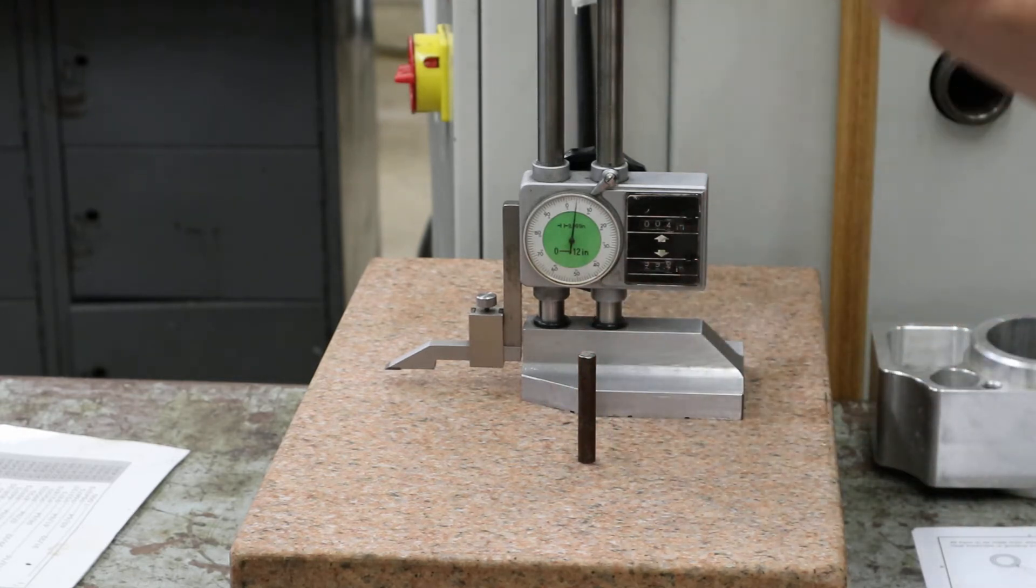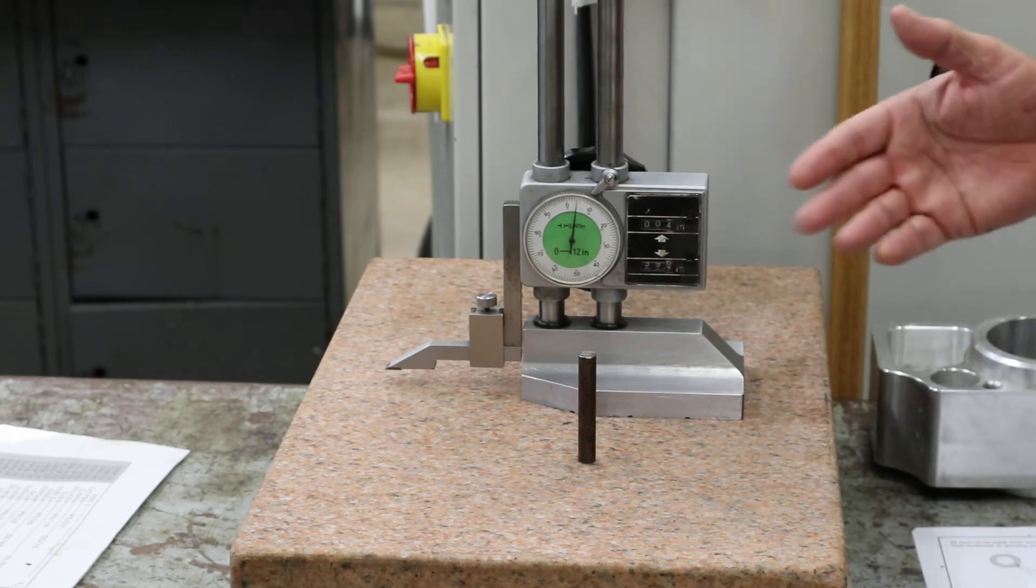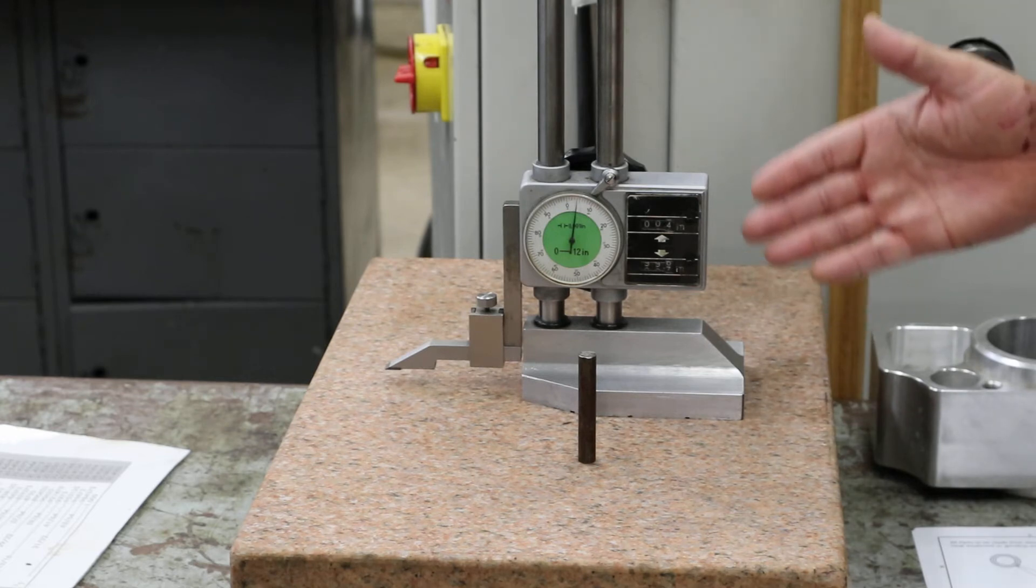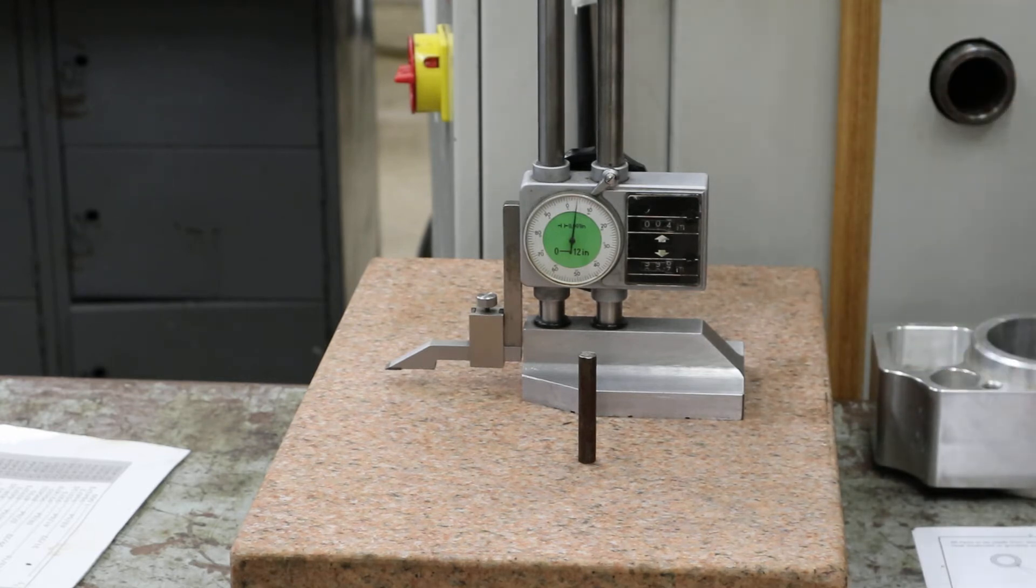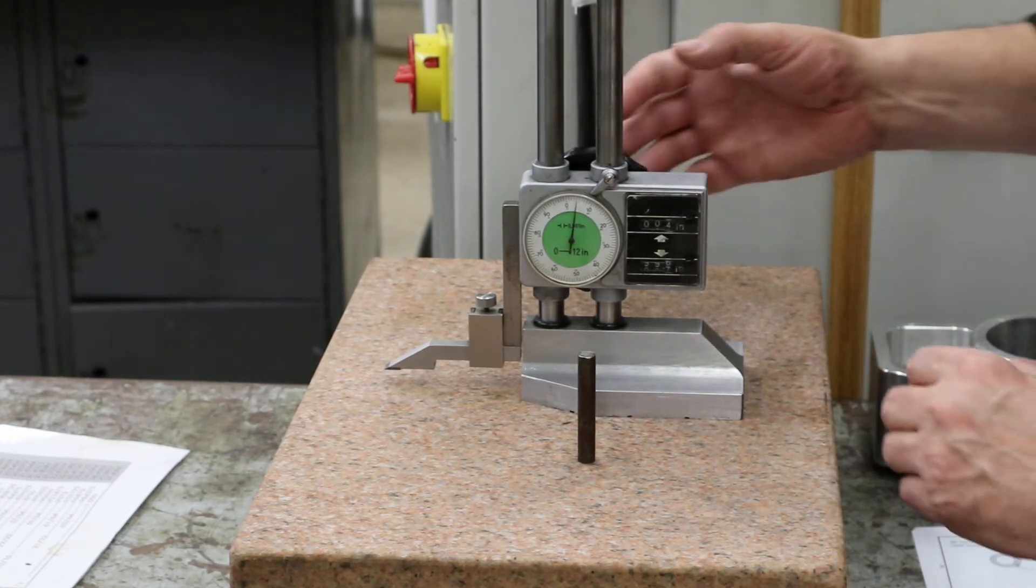I can measure it with a number of different ways. Calipers is more accurate than a ruler, but the micrometer is more accurate than the caliper. And the height gauge is equivalent to, let's say, the caliper.